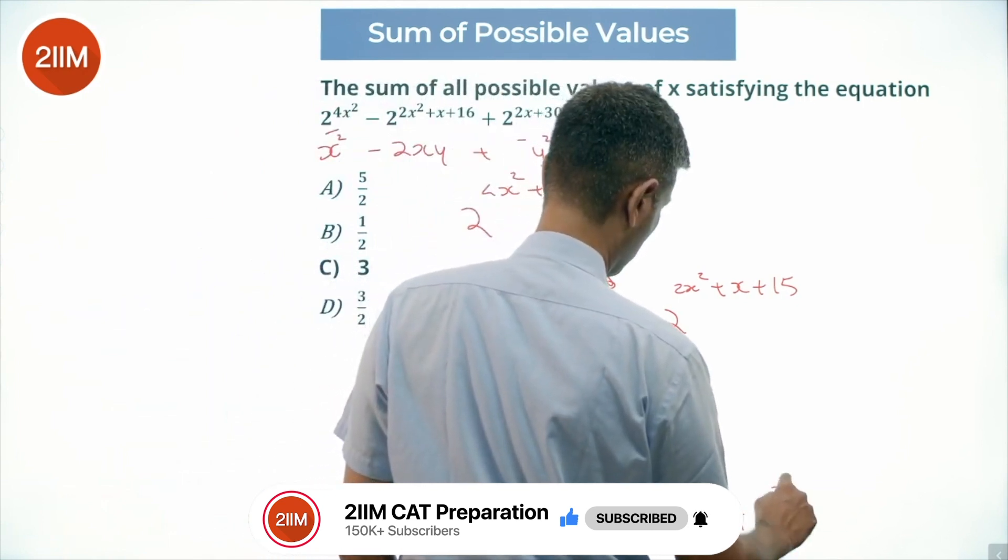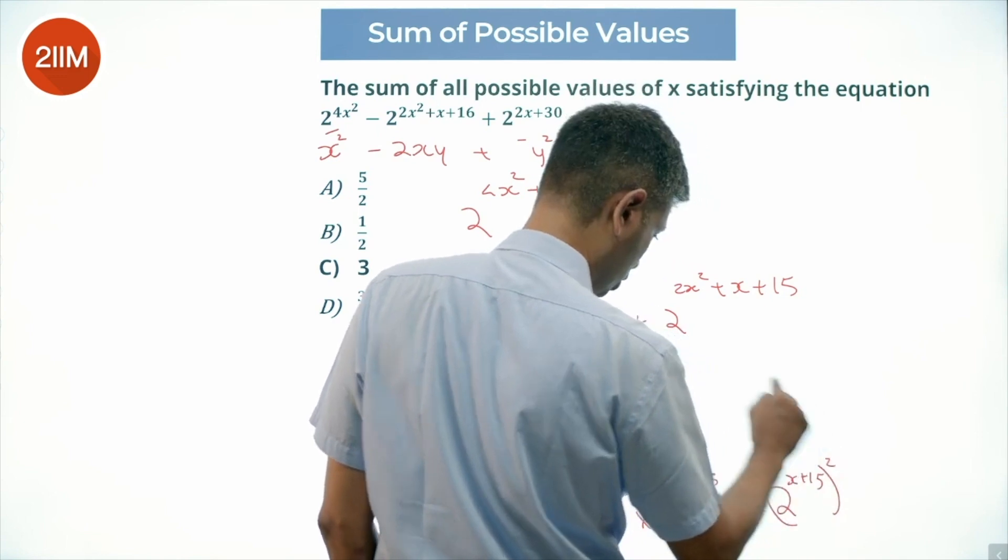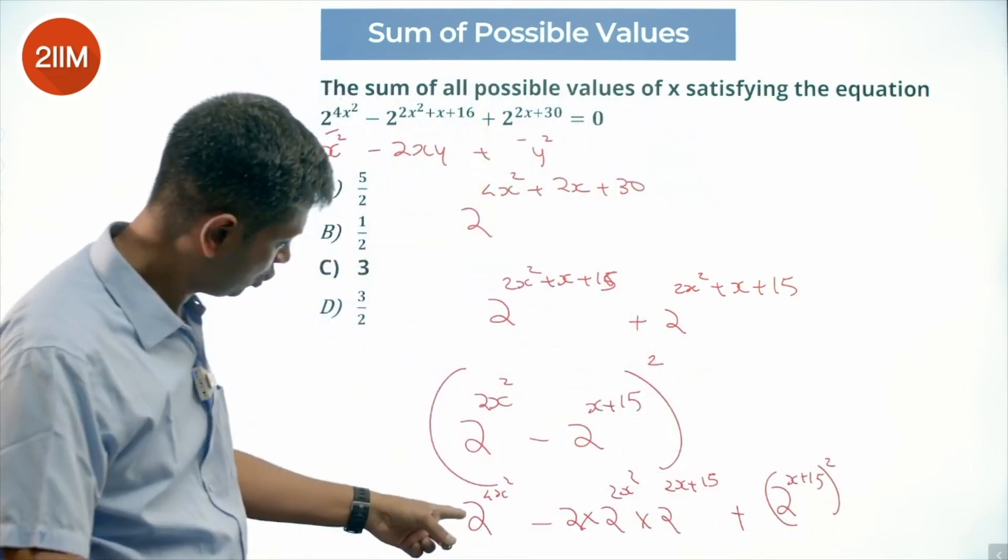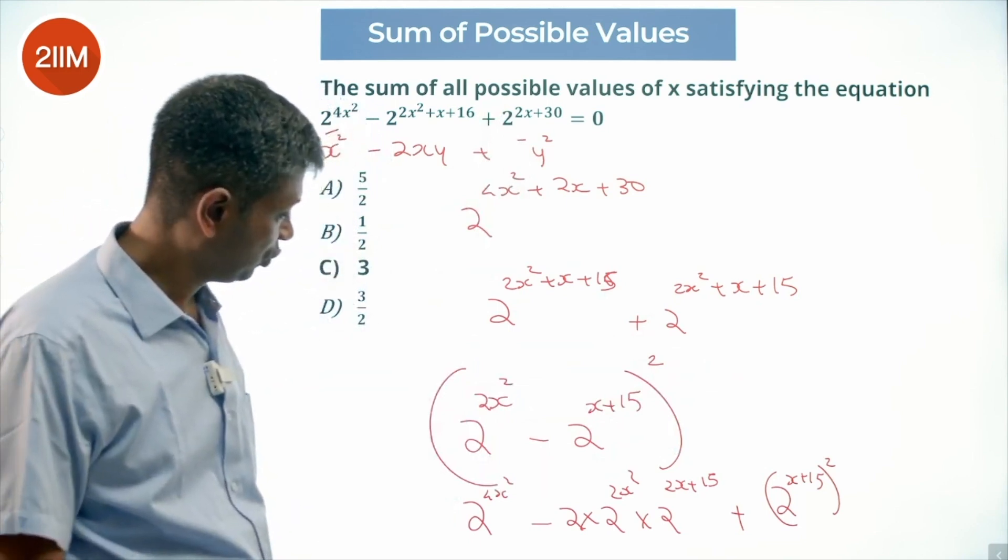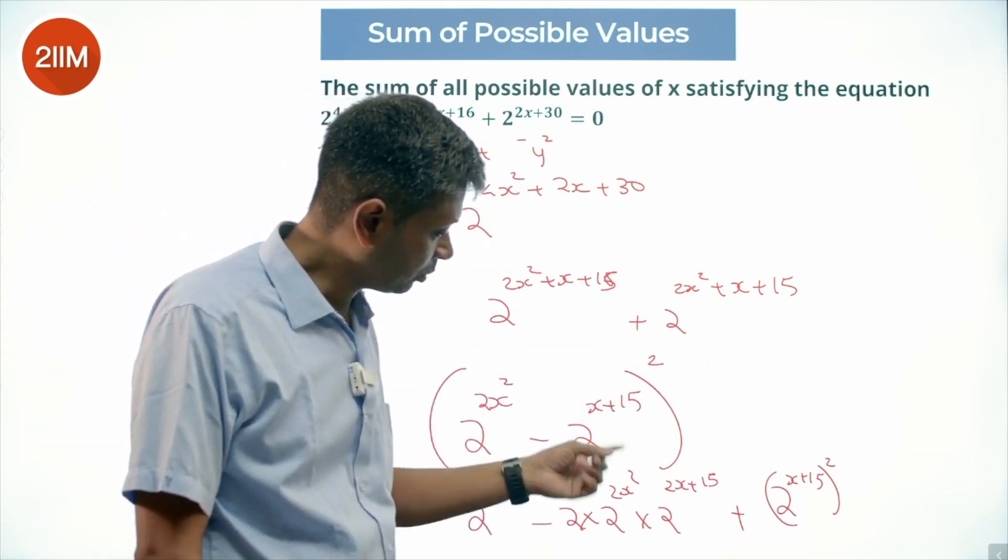This is 2x plus 20 plus 20 plus 2 power x plus 15, the whole square, I am just verifying this. This becomes 2 power 2x plus 30, that works. This states as 2 power 4x square, this works. Because this becomes minus 2 power 2x square plus 2x plus 15 plus 1.